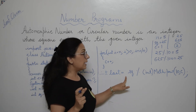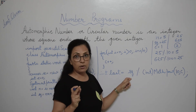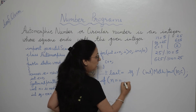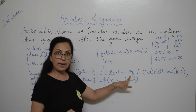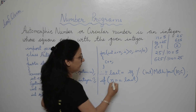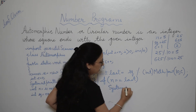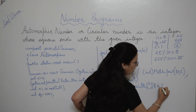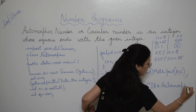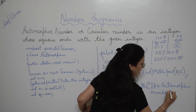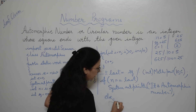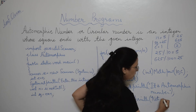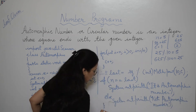Now we check whether n equals last. If this condition is true, we print it is an automorphic number using System.out.println. Otherwise, in the else block, we print it is not an automorphic number. Then we close the main function and close the class.